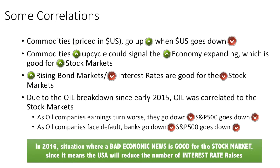Oil is positively correlated to the Canadian dollar. The next correlation is that a commodities up-cycle could signal the economy expanding, which is really good for the stock market — referring to the main stock markets and also emerging market economies. When stock markets are going up, you see the USD/JPY pair going up because people are borrowing against the yen — the low yield in yen — in order to buy stocks.